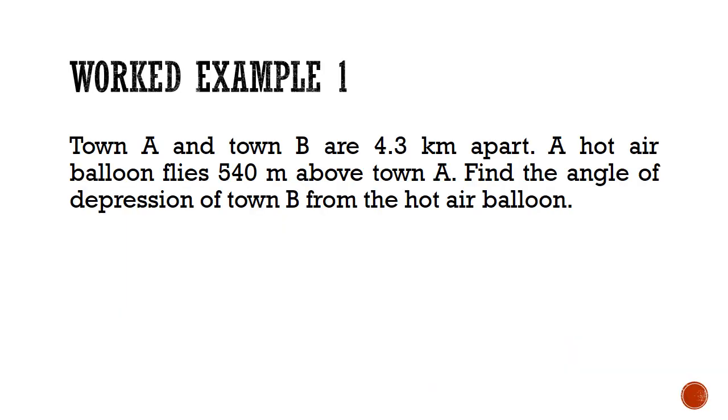Let's now look at a work example. I have Town A and Town B. They are 4.3 km apart. A hot air balloon flies 540 meters above Town A. Find the angle of depression of Town B from the hot air balloon. Let's do this together.